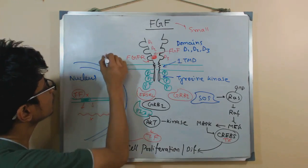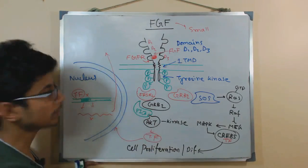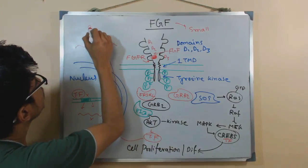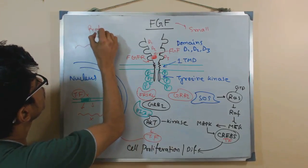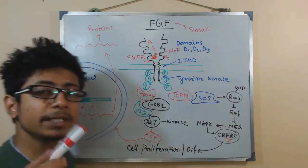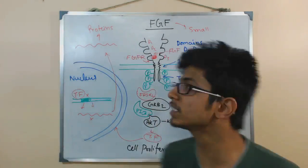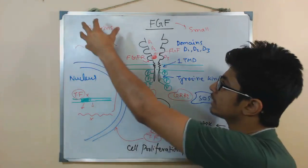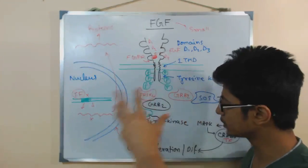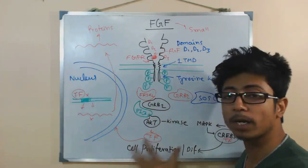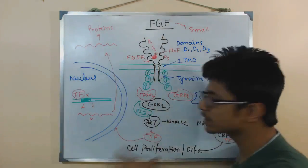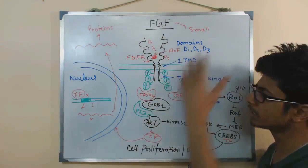That mRNA will be brought outside the nucleus, and once we have this mRNA, we will make proteins by translating it. Those proteins are the important thing we require because these protein molecules help in proliferation and differentiation. That is why this whole system is important.